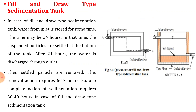First, based on the process, it is a fill and draw type sedimentation tank. If you see the figure, it is a rectangular sedimentation tank. In this, first of all, the entire tank is filled up with the wastewater. Then sufficient detention time is provided so that the suspended particles present in the wastewater start settling due to reduction in the velocity. In case of fill and draw type sedimentation tank, water from the inlet is stored for some time.